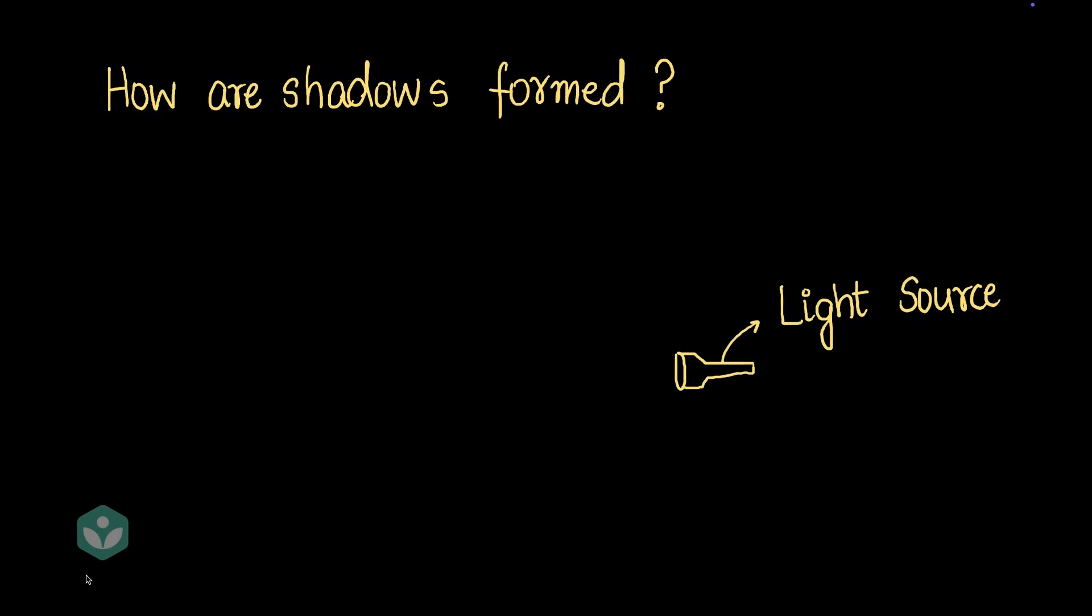So, the first question: how are shadows formed? Now, let's say we take a light source like this, maybe a torch or a candle or a bulb, and we turn it on.